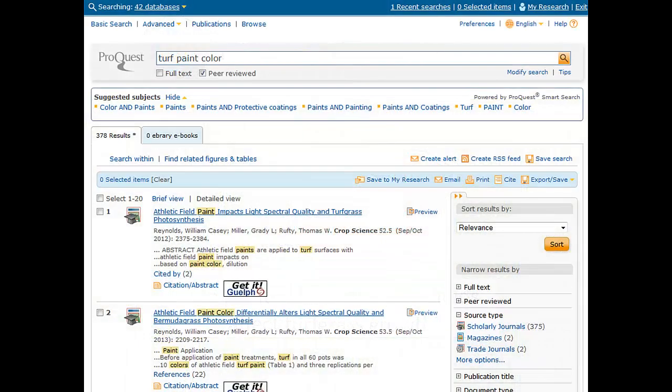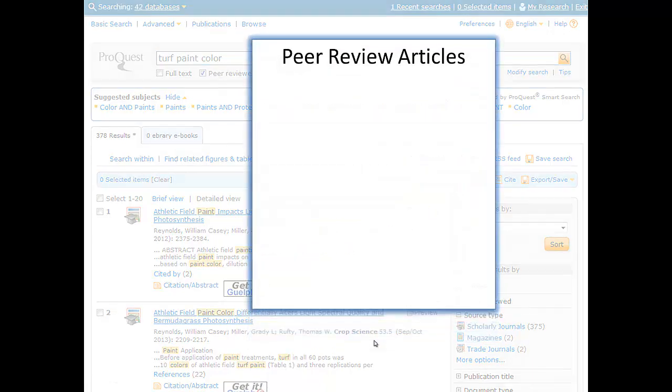For this example, I have used ProQuest to perform my journal search. Using the keywords turf, paint, and color, and restricting my search to peer-reviewed articles, I found this paper published in 2013 in the journal Crop Science. This article went through a process of peer review, so I can be fairly confident of the findings of this study.